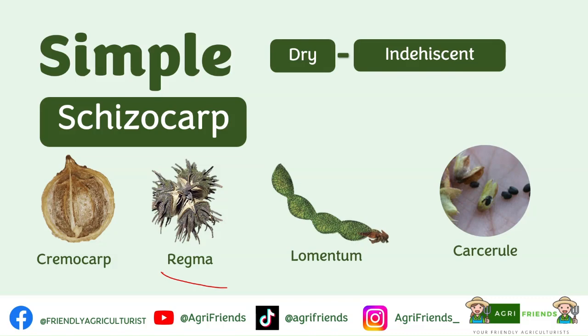Next we have the regma. This fruit splits into many parts called cocci. Each coccus represents a carpel containing one or two seeds. An example is the castor fruit. Lomentum is a dry legume-like fruit that is transversely constricted between the seeds. At maturity, it splits at the constriction so there is one seed per section. Lastly is the carcerule — this fruit splits into four chambers at maturity, each chamber enclosing a seed. This can be seen in the mint family, such as basil.